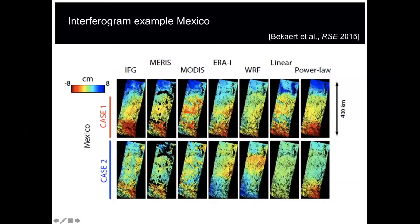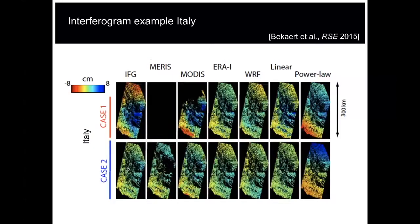We can do the same comparison over Italy. These are the original interferograms. MERIS shows no correction — probably one or both acquisition dates had clouds. MODIS has some data but a significant portion is missing; where available it does a pretty good job. The weather models generally don't estimate very much of the original, which is a pretty large signal. The linear and power-law methods estimate a correction, but in some cases these methods can also go significantly wrong.